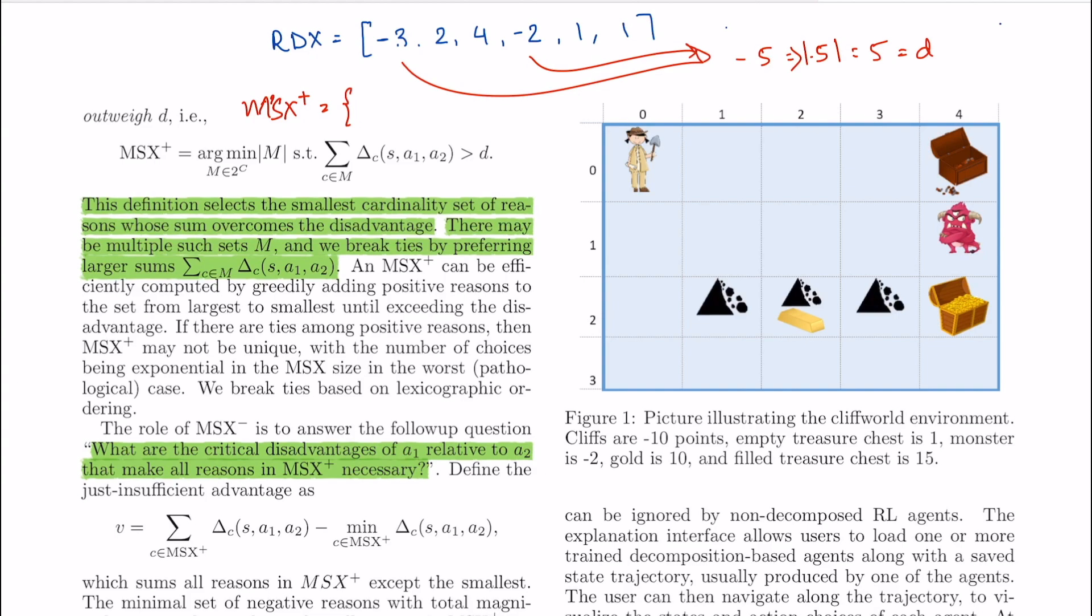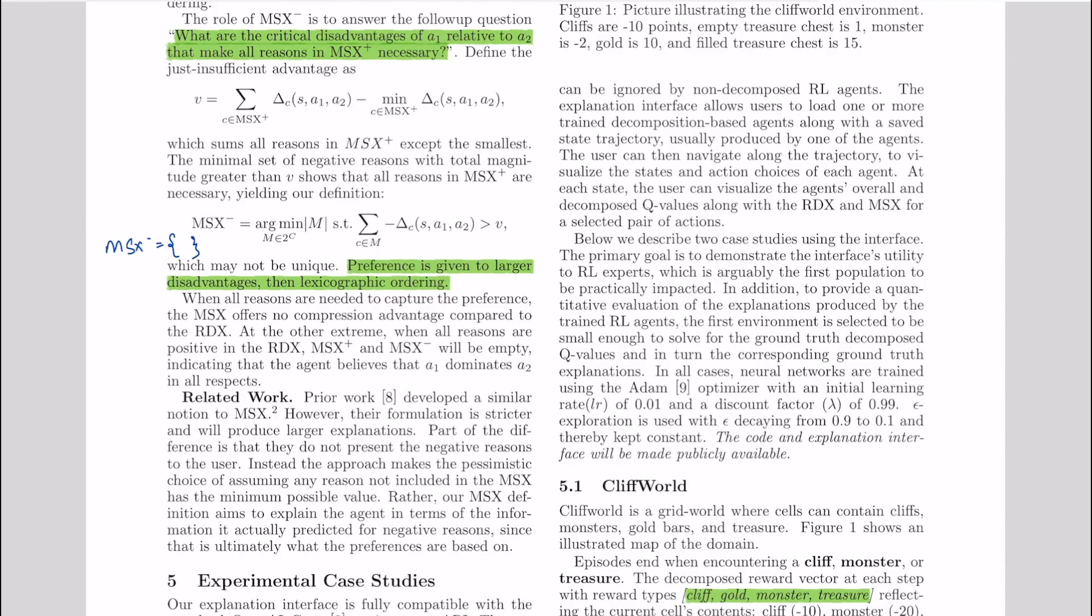Then in this case we would have something like two comma four which sums to six and is greater than D. MSX plus answers this question: why should I choose action A over B and what advantages does action A give over B.